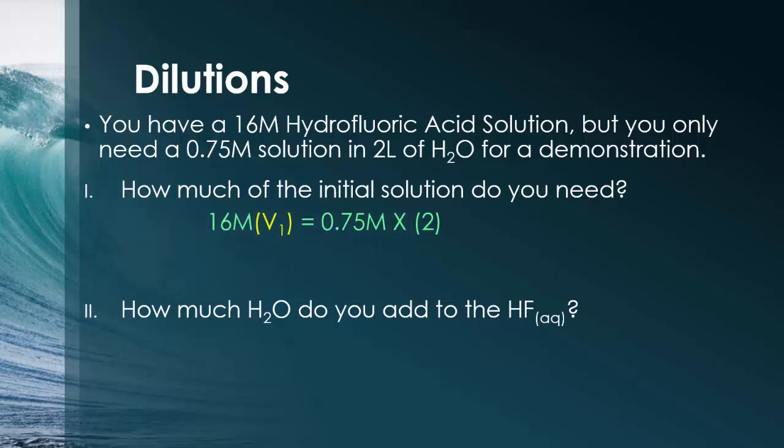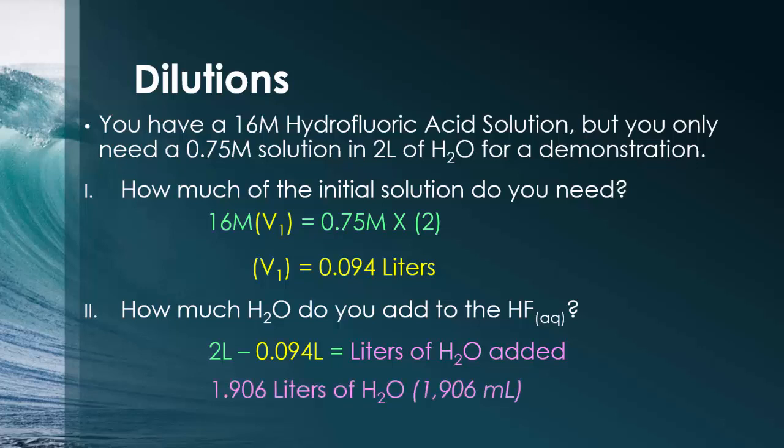So, using again the M1V1 is equal to M2V2 formula, you're noticing that your initial molarity is 16 times an unknown amount. You then know you want a 0.75 molar solution and it's in 2 liters. So, 16 times V1 is equal to 0.75 times 2 and when you cross multiply and solve, you should notice that you get 0.094 liters. So, you need only 94 milliliters of the acid. So, how much water do you add now to the hydrofluoric acid to get your total 2 liters? So, you're going to do 2 liters minus the 0.094 liters that we just calculated and you're going to get the liters of water which is 1.906 liters of water, which is also 1,906 milliliters. You'll be asked questions like this. How much do you need of this if you're given one of its values and you have to then dilute it into another molarity and another volume? This is how we would actually make dilutions in labs too.